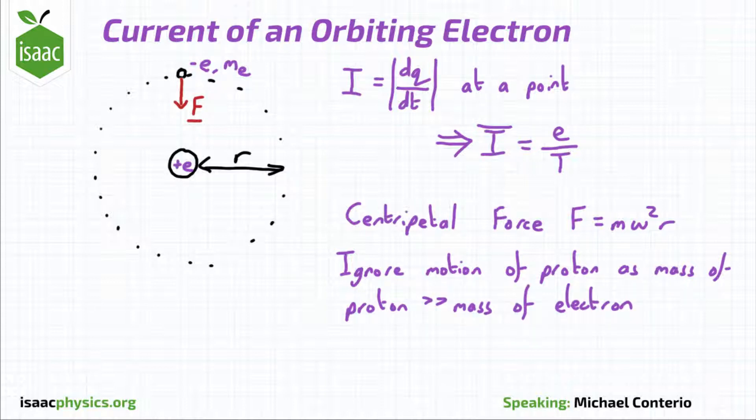By comparing the electric force on the electron and the centripetal force needed to keep it in its orbit, calculate the current passing a point in its orbit.